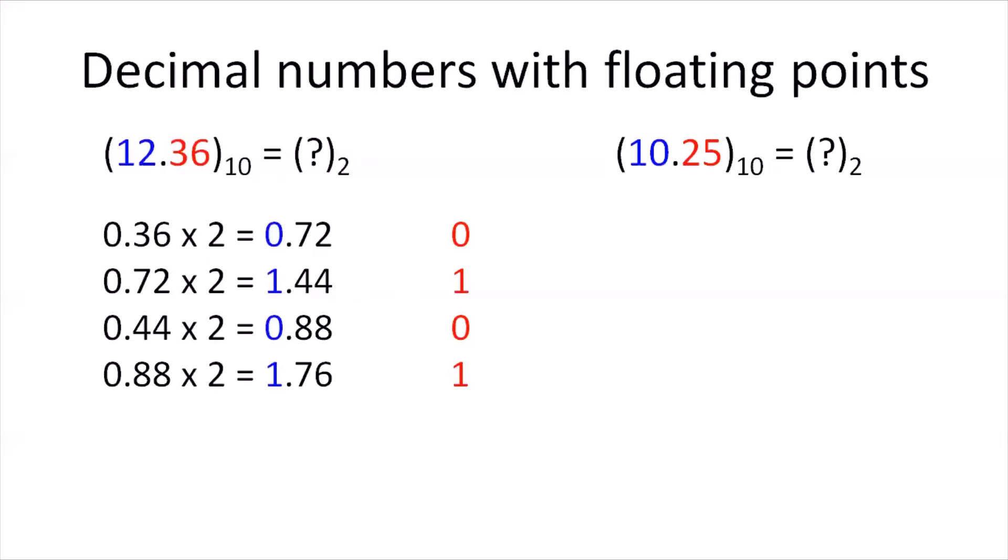10 here is converted to its binary equivalent using any of the methods we have discussed earlier. For the fractional part, 0.25 is initially multiplied by 2. We get 0.5 as the answer. Since the integral part of 0.5 is 0, 0 gets listed.